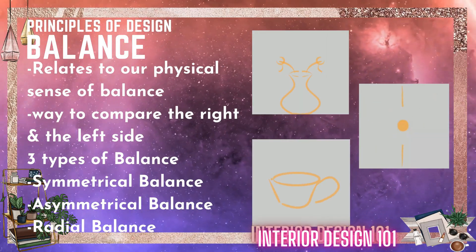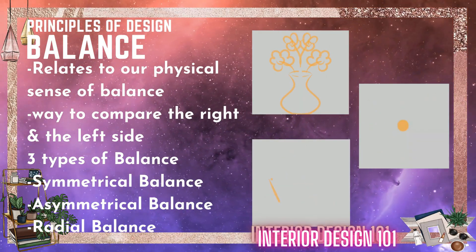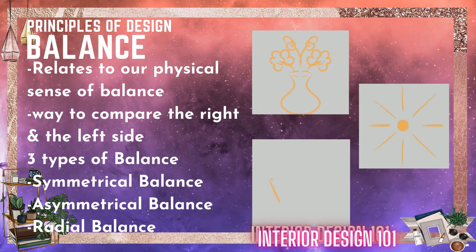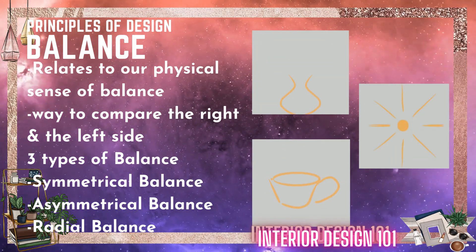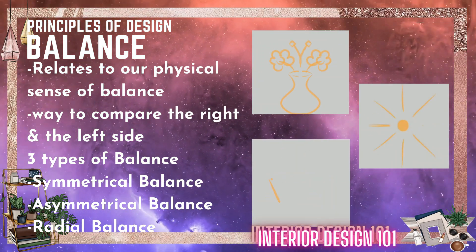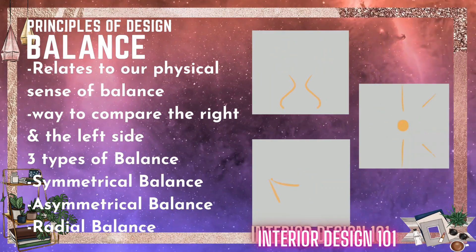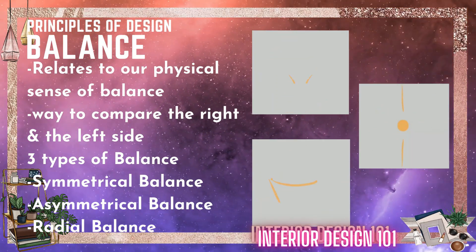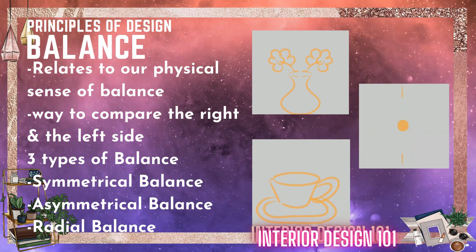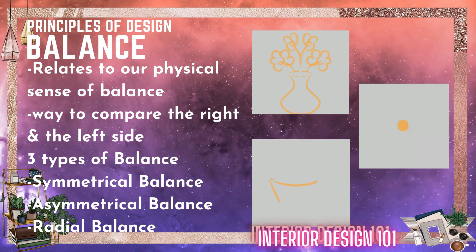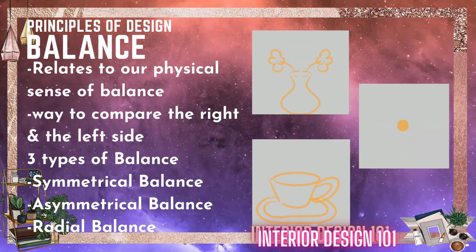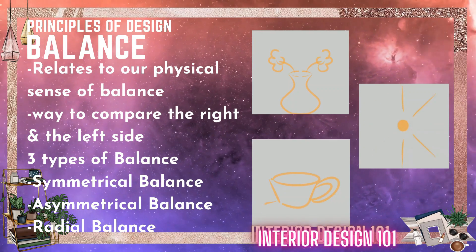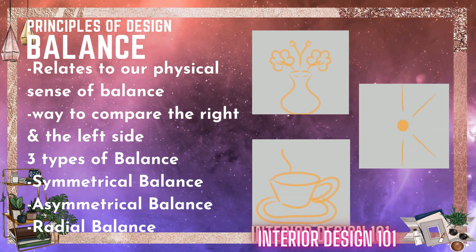The first principle is Balance. Each element has a visual weight. It can be in terms of size, tone, thickness, or texture of a furniture. You cannot keep all furniture in just the corner of the room — we need to balance everything up.